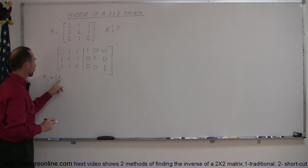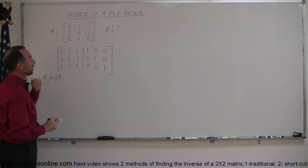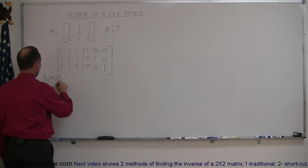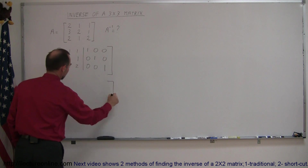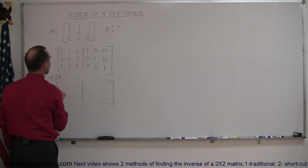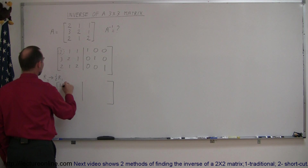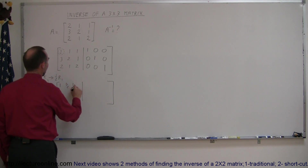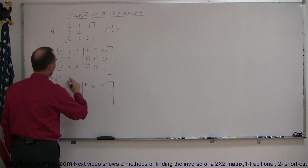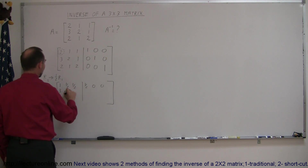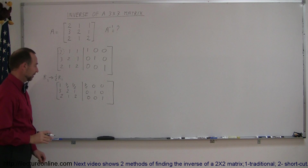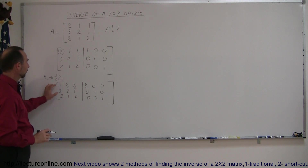You multiply the first row by one-half and replace the existing row. So this whole row is divided by 2: this becomes a 1, one-half, one-half, one-half, 0, 0. Everything else stays the same. We got a 1 where we want it, but we don't have everything else the way we want it yet.